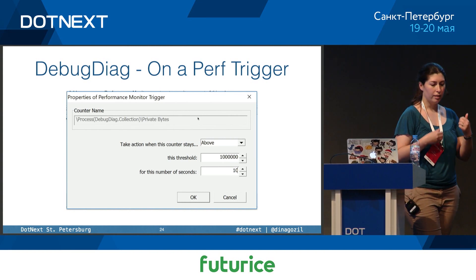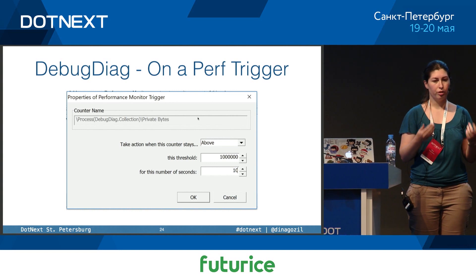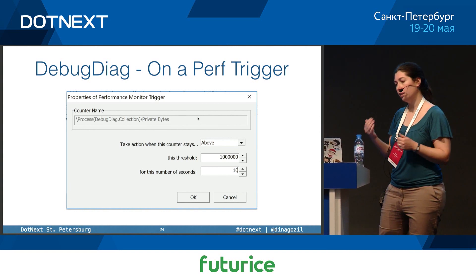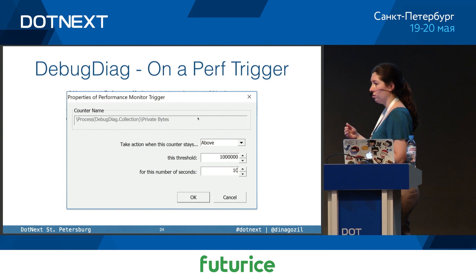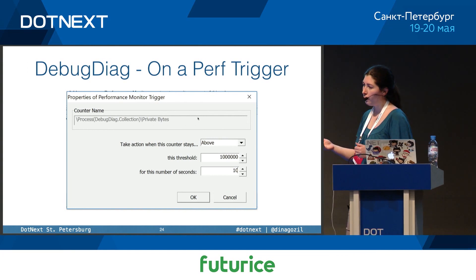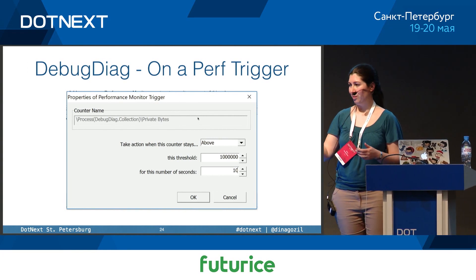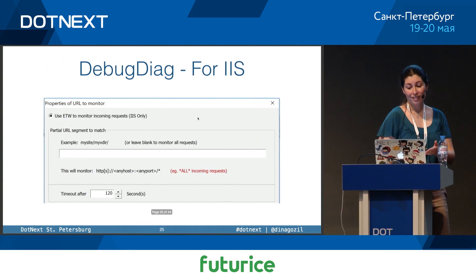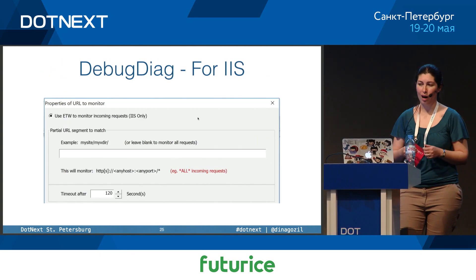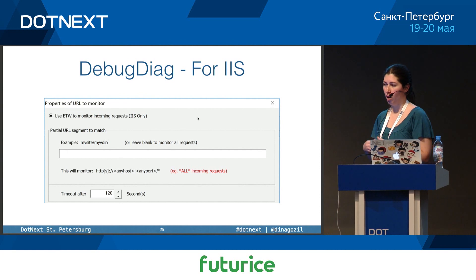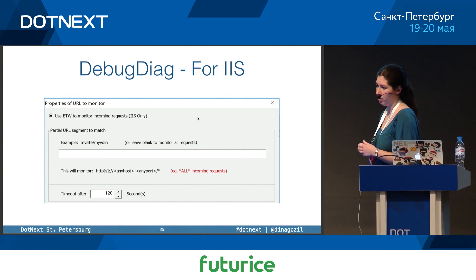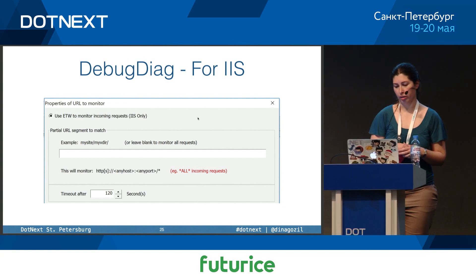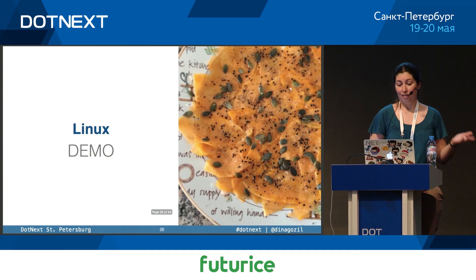The last thing on Windows that I want to show you is a tool called DebugDiag. It provides a very convenient UI for configuring all sorts of dump-taking scenarios. It supports both crashes, exceptions, and performance investigation. For example, you can configure it to take a dump whenever a certain exception occurs in your application, whether it's managed or native. You can configure it to take a dump whenever a certain event happens — for example, when a thread is created. You can monitor a certain performance counter, for example memory, and trigger a dump when your process exceeds a certain amount of memory for a certain amount of time. It even has a special UI for analyzing slow IIS exceptions, so it's really easy to work with.